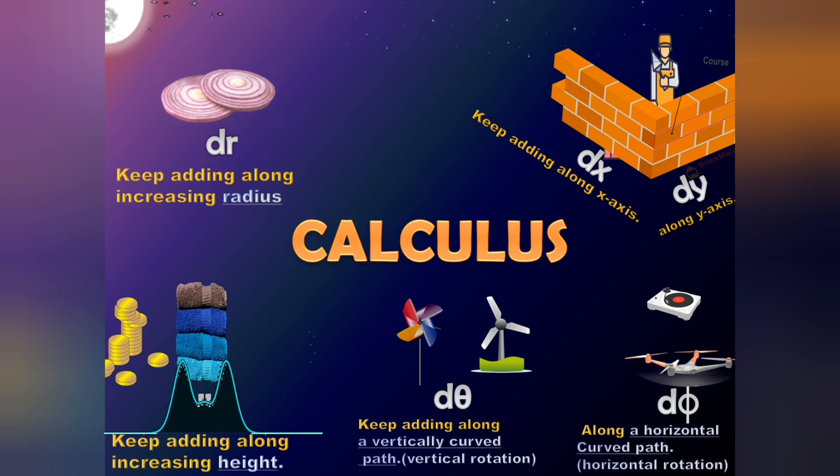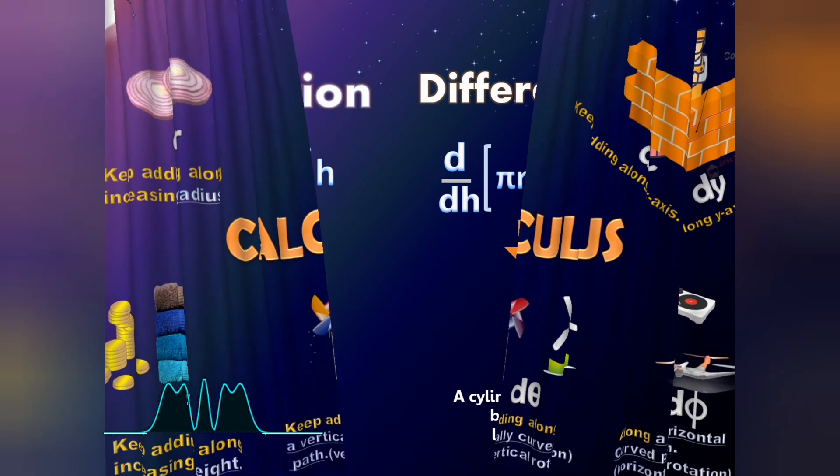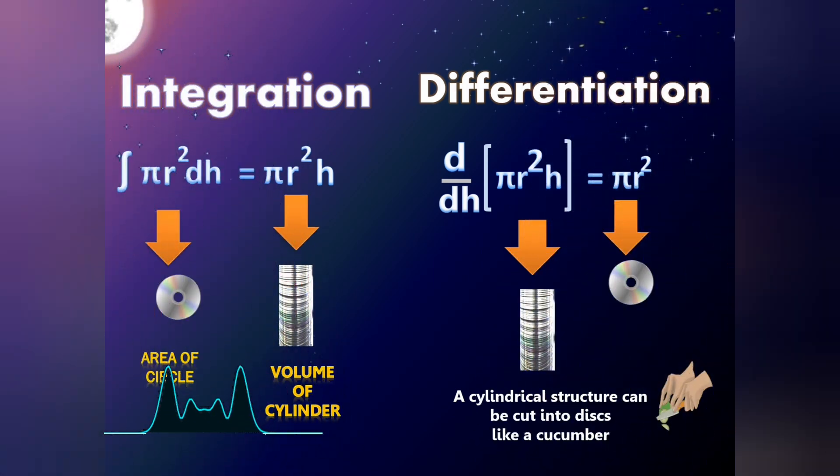Also, what if integration and differentiation are reverse processes of each other? Add discs one above another along a height, you get a cylindrical structure. That's integration. Remove discs along height, you get circles.